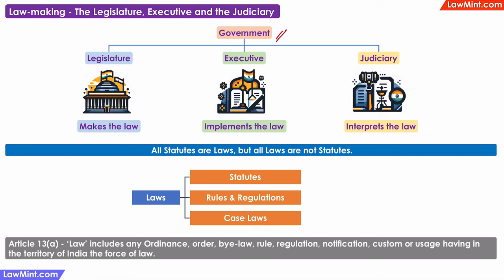When we talk about the concept of a government, we know that there are three major branches: the legislature, the executive, and the judiciary. The legislature makes the law, the executive implements the law, and in case of any disputes, ambiguity, or confusion, the judiciary will interpret the law. While this is a very simple understanding, when it comes to law making, there is a little more that we can discuss. In a previous video, I had explained the steps through which a bill becomes an act, that is how statutes are made. And you will also remember that all statutes are laws, but all laws are not statutes.